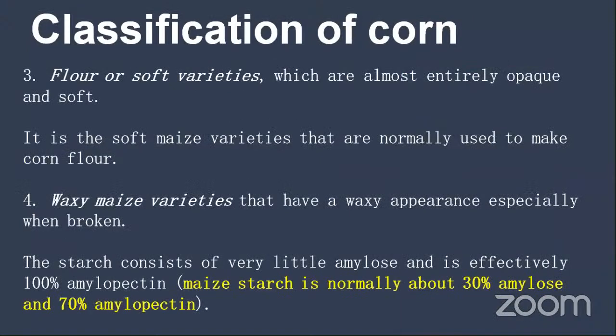The next kind of variety is the soft or flour variety. In this variety, the entire endosperm on the outer surface is soft in nature and opaque. This variety is known as the flour or soft variety, and it is usually used for the preparation of corn flour. The last variety is waxy maize.